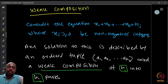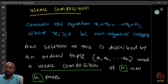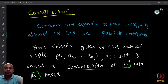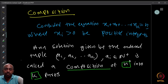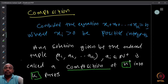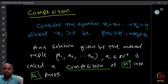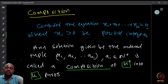Our ultimate aim is to count the number of possible weak compositions. Before that, let us also look at a slightly different definition where x_i is strictly greater than 0 — that is, x_i cannot be 0. In that case, x1 + x2 + ... + xk = n with x_i being positive integers. Any solution given by the ordered tuple (a1, a2, ...) where a_i belongs to the positive integers is called a composition of n into k parts — not a weak composition.